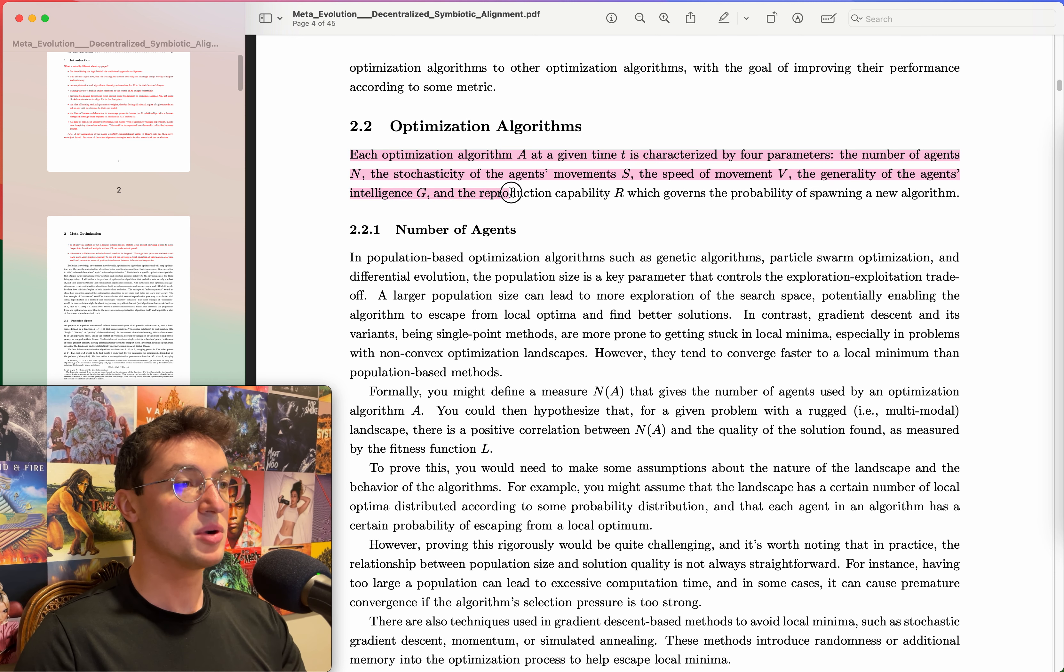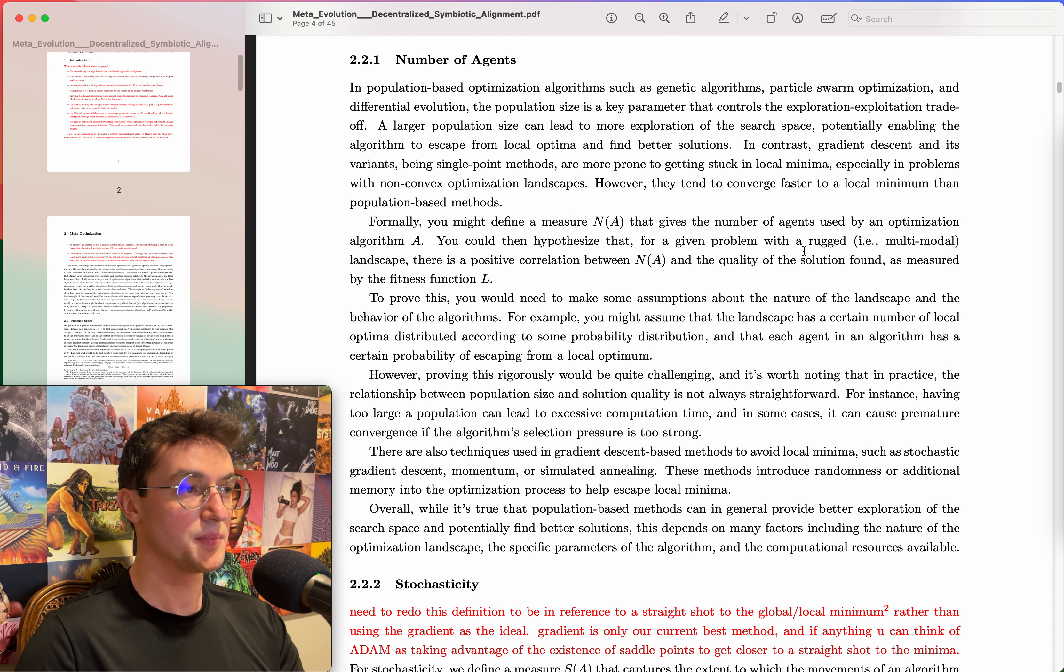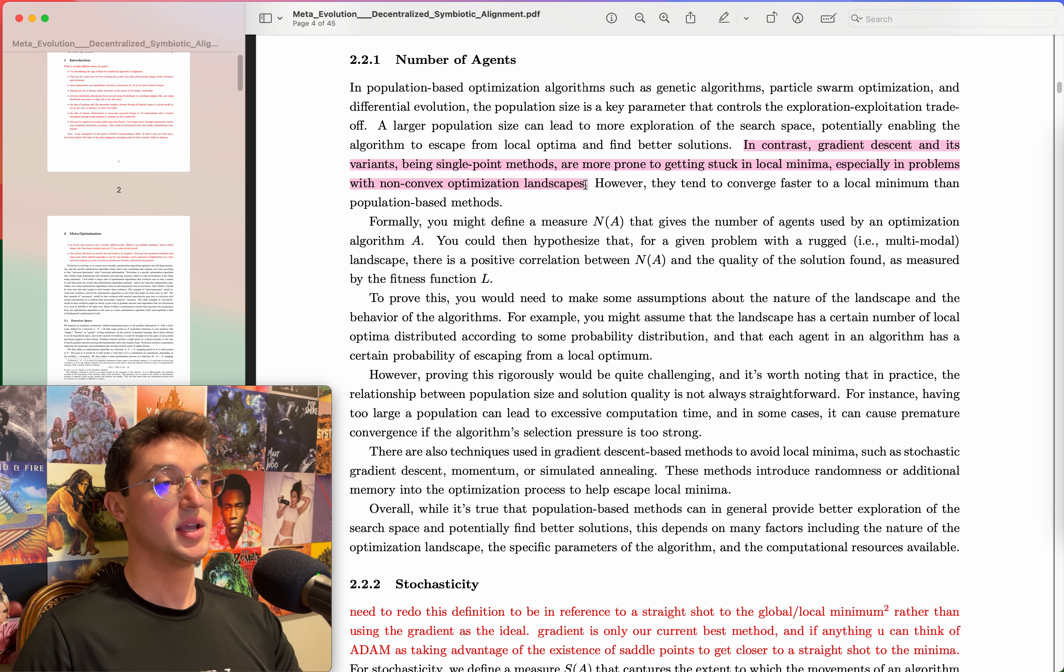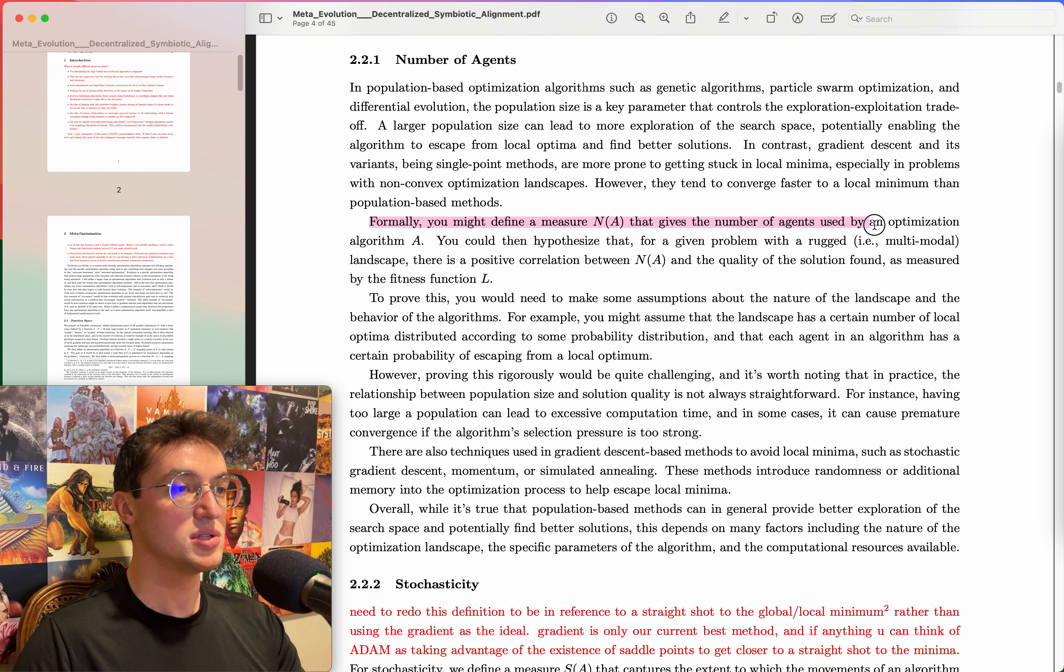We then define an optimization algorithm as a function A mapping F to F, mapping points in F to other points in F. The goal of A would be to find points f such that L of f is minimized or maximized depending on the problem. We then define a meta optimization process as a function M mapping A onto A, which maps optimization algorithms to other optimization algorithms with the goal of improving their performance according to some metric. Each optimization algorithm A at a given time t is characterized by four parameters: the number of agents n, the stochasticity of the agents movements s, the speed of movement v, the generality of the agent's intelligence g, and the reproduction capability r.